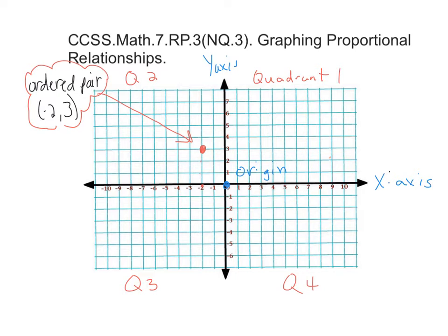Before we get into the graphing of proportional relationships, we need to look at the vocabulary. If we're looking at graphing, you've seen this before. This is a four quadrant system, and so we're looking at the quadrants here.